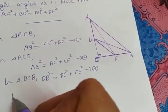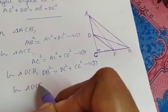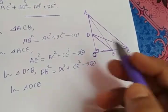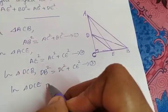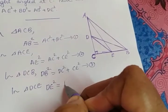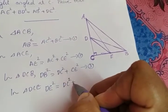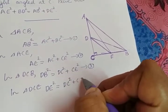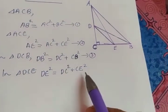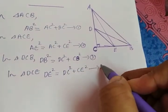The fourth triangle is triangle DCE. In triangle DCE, angle C is 90 degrees and DE is the hypotenuse. So DE square is equal to DC square plus CE square. Let that be equation number 4.